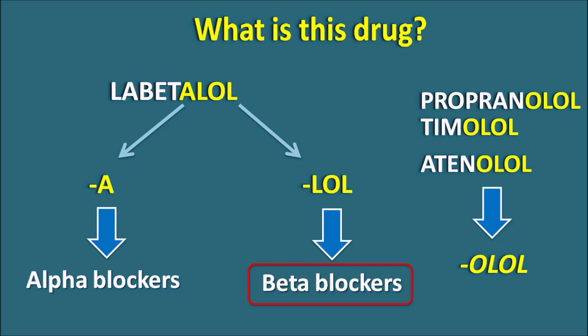Since Labetalol is not selective for only beta receptors, it has the suffix 'alol.' We can easily differentiate: if drugs have suffix 'olol,' they act on beta receptors only; if they have suffix 'alol,' they act on beta receptors along with an additional action. Labetalol has an additional action on alpha receptors, making it both an alpha blocker and a beta blocker.